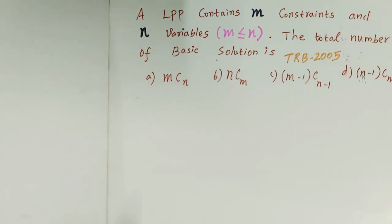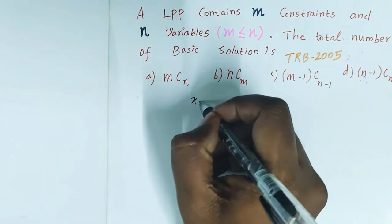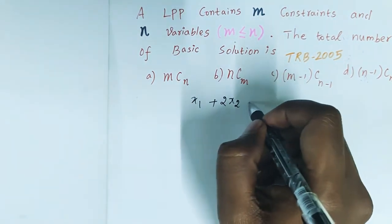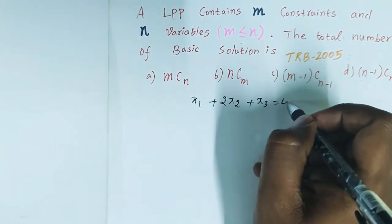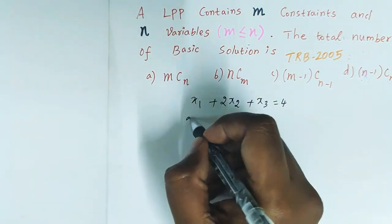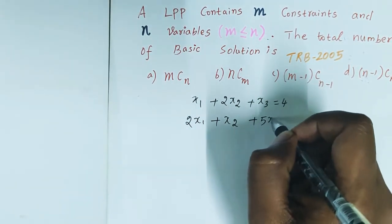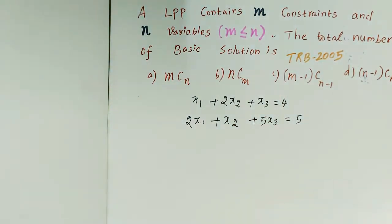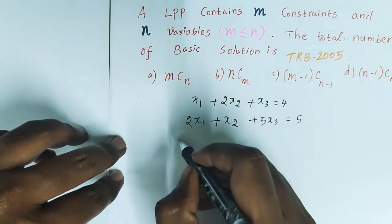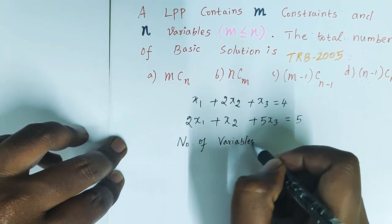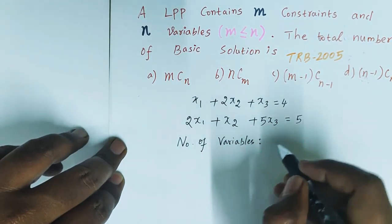One example will explain. Suppose one LPP has two constraints. For example: x1 plus 2x2 plus x3 equals 4 is one constraint, and 2x1 plus x2 plus 5x3 equals 5 is another constraint. Looking at the number of variables, we have x1, x2, x3, so n is 3.